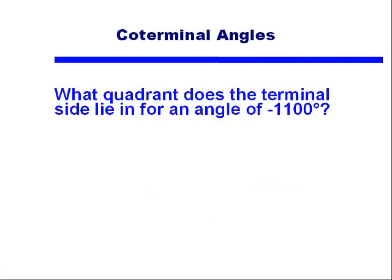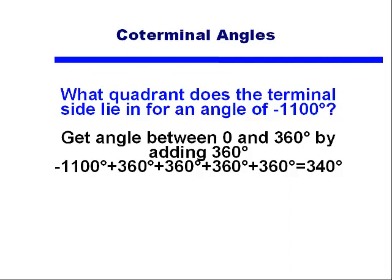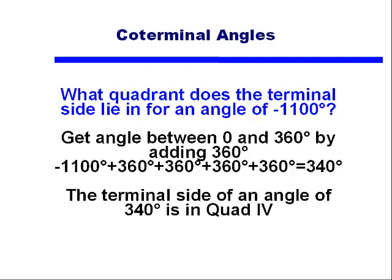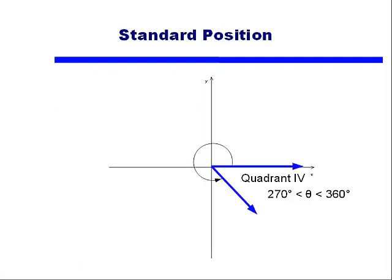Let's look at one more example: an angle of negative 1,100 degrees. In this case, instead of subtracting complete rotations, we're going to be adding them. We want an angle between 0 and positive 360 degrees, so we add complete rotations until we get a positive result in that range. We need to add 4 complete rotations of 360 degrees, which gives us 340 degrees. An angle of 340 degrees has its terminal side in quadrant IV, since quadrant IV holds angles between 270 and 360 degrees.